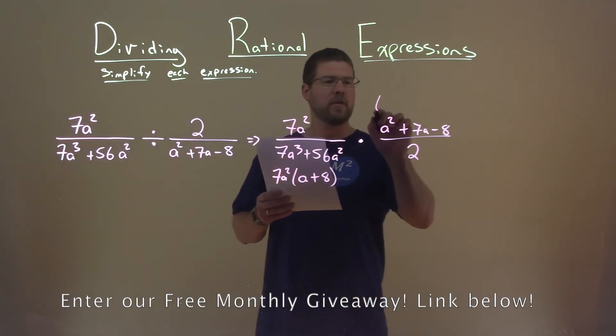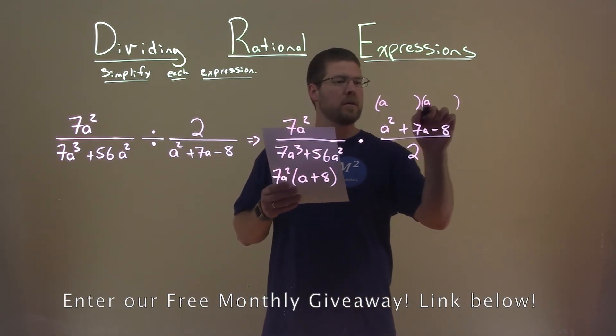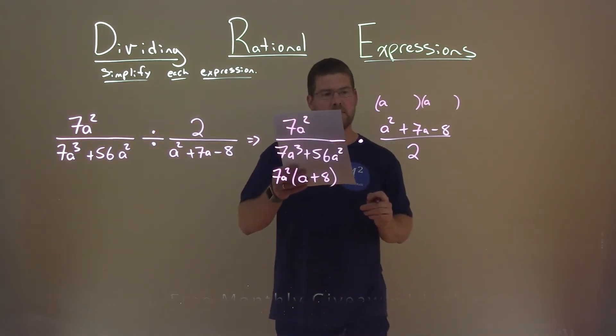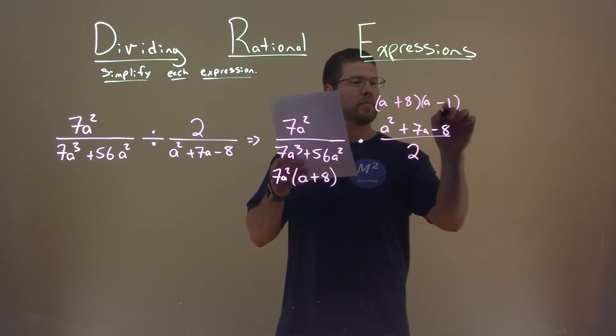Here, this can factor. And it factors to be, well, 2 numbers multiplied by negative 8, but add to be a positive 7, and that's a positive 8 and a negative 1.